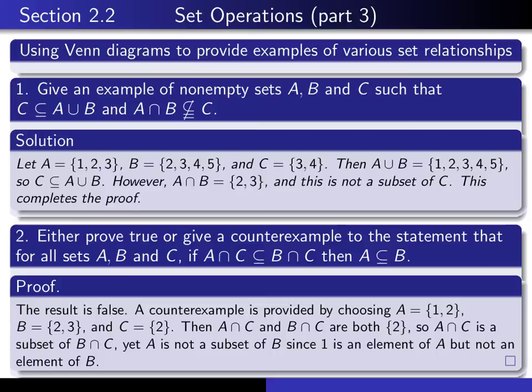Okay, so here's my proof. The proof is written as follows. We say the result is false, and a counterexample is provided by choosing A to be this set, B to be this set, and C to be this set. And now I just have to verify that this happens, but this does not happen.